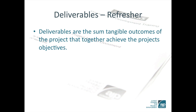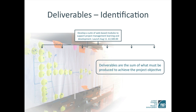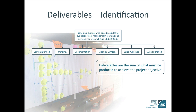So let's take a look at how we develop deliverables. What tangible assets or products does the project team need to produce in order to achieve this objective? Take a look at these deliverables. Does this make sense? If we produce all of these deliverables, will we have achieved the objective? Note that the deliverables are described as outputs, not activities.